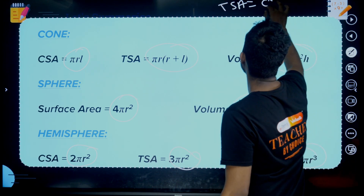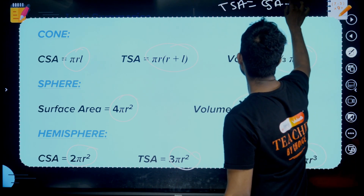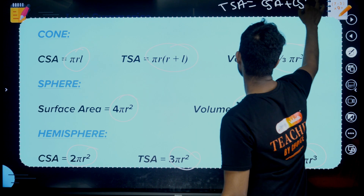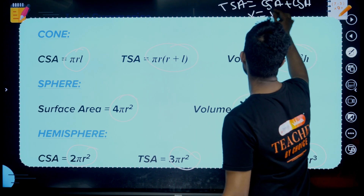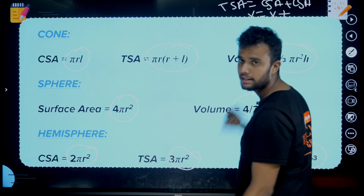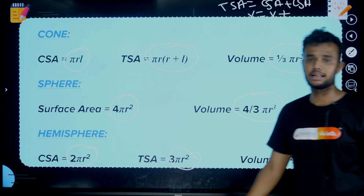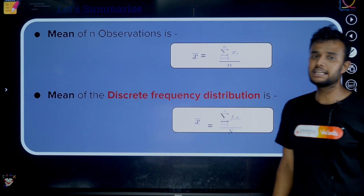For combination of solids, TSA equals the sum of CSAs of both shapes. Volume equals the sum of the individual volumes. This is done.